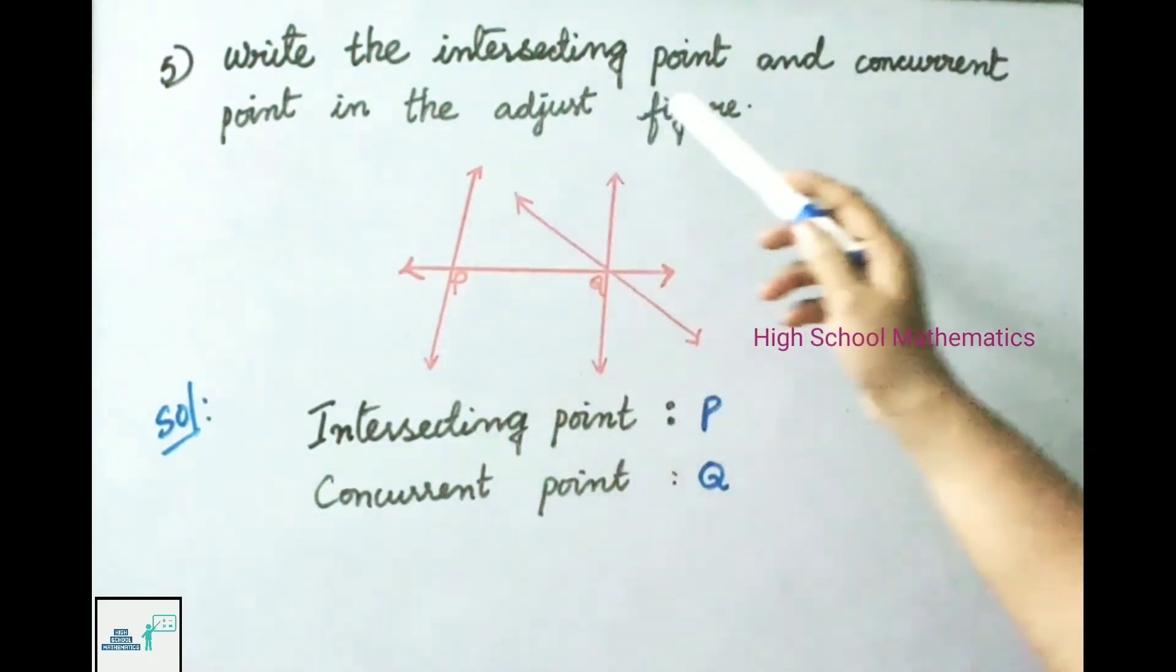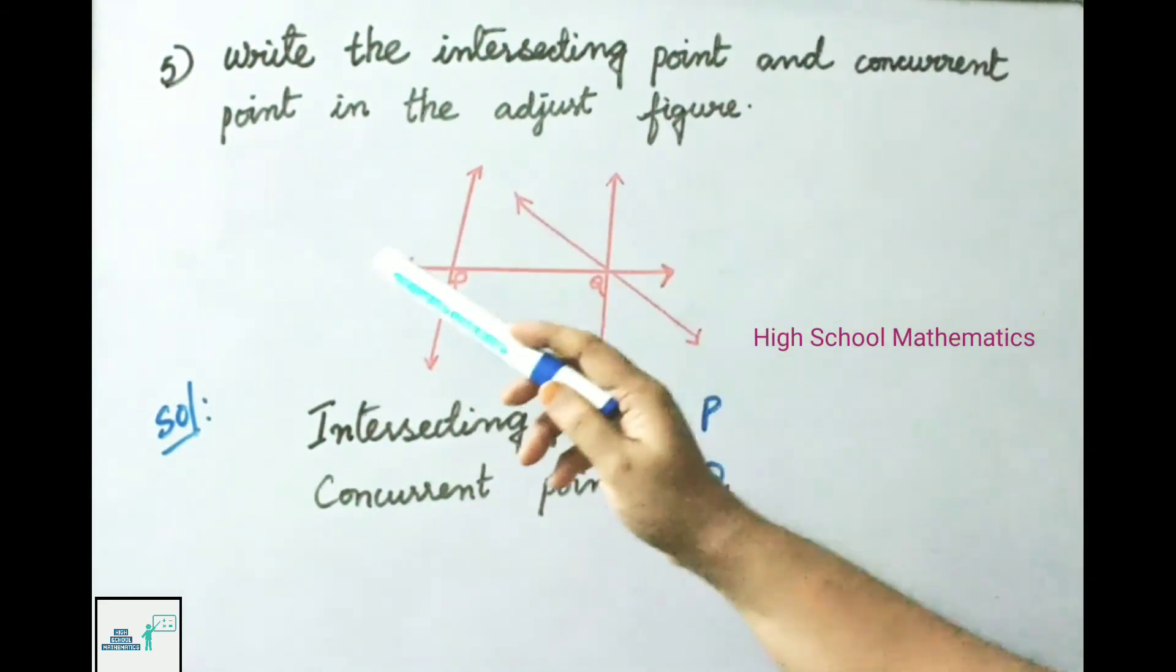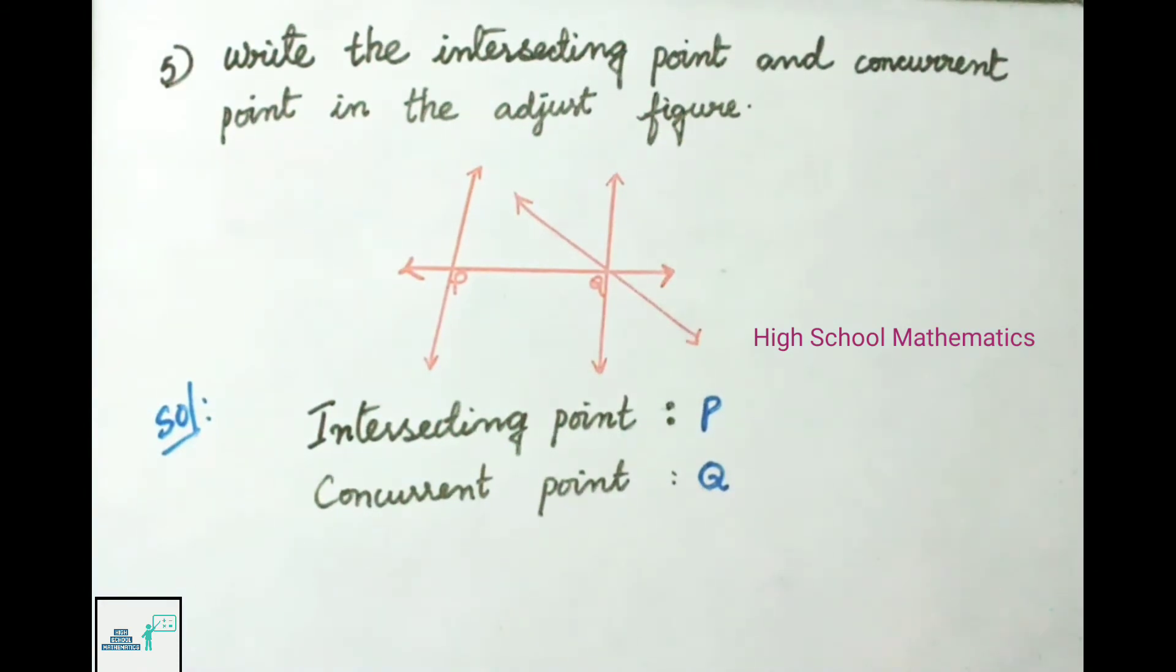See now question number 5. Write the intersecting point and concurrent point in the adjacent figure. Let us see the solution. Intersecting point from the given figure is P and concurrent point is Q.